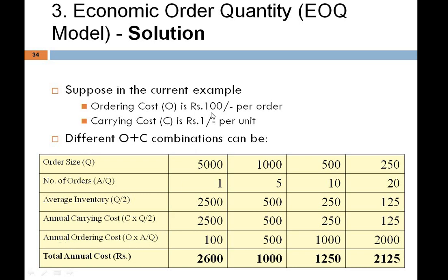We are concerned about the total cost — the combination of ordering cost and carrying cost. Adding them: 1 order gives ₹2500 + ₹100 = ₹2600; 5 orders gives ₹500 + ₹500 = ₹1000; 10 orders gives ₹250 + ₹1000 = ₹1250; 20 orders gives ₹125 + ₹2000 = ₹2125. The minimum total cost is ₹1000, achieved with 5 orders of 1000 units each — this is the optimum solution.